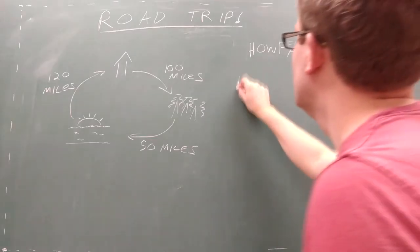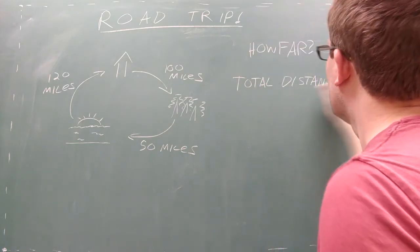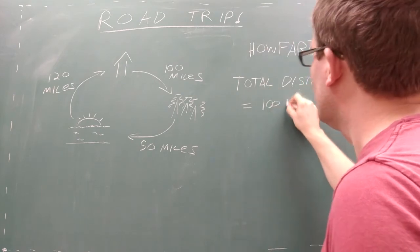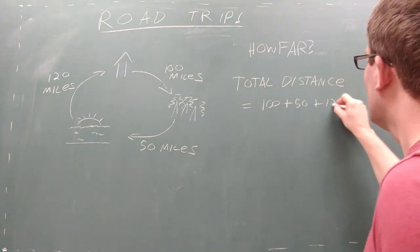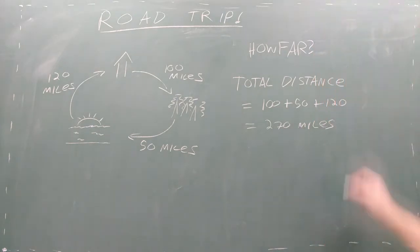The first answer involves calculating the total distance that you traveled. Calculating the distance traveled is like counting the number of steps you took to get somewhere, or figuring out how much gas you needed to make a trip. In this case we would add 100, 50, and 120 to arrive at a total distance of 270.